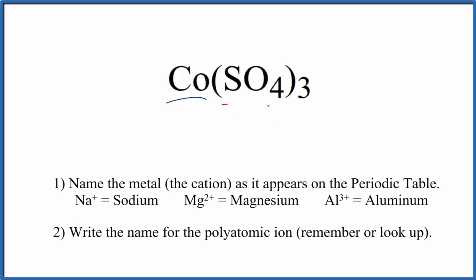To write the name for Co(SO4)3, we first need to recognize cobalt here. This is a transition metal, and this SO4, this is a polyatomic ion. It's called the sulfate ion, and we have three of them.